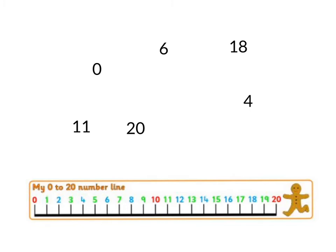Here are some more numbers. I want to put these numbers in order from the smallest number to the biggest number, and I'm going to use my number line to help me. Which number comes first? The smallest number is 0. Which number do you think comes next? Look along the number line. Which one comes next? It is 4.